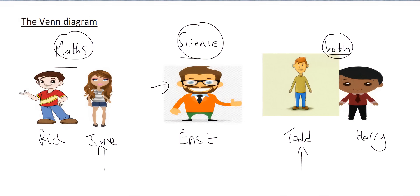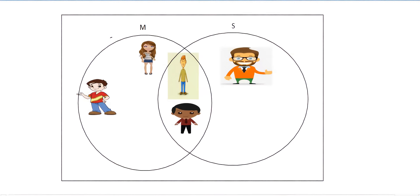And then lastly will be Harry, who, just like Todd, does both maths and science. And there we have a simplification of the whole process. So this part is for people who do maths only. This part, highlighted in purpley pink, that's for people who do science only.